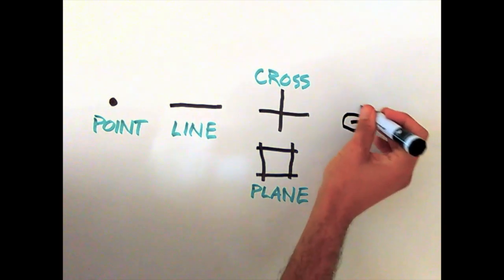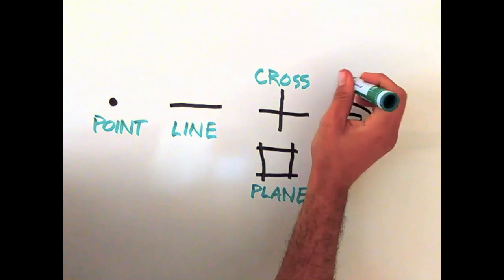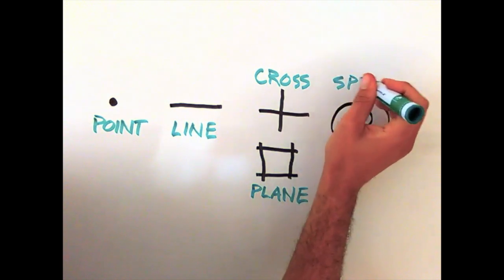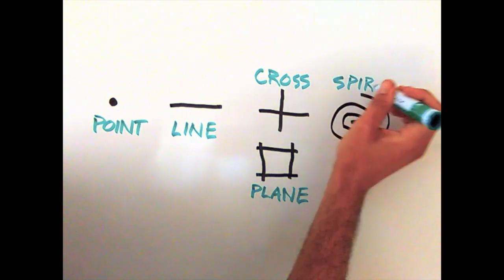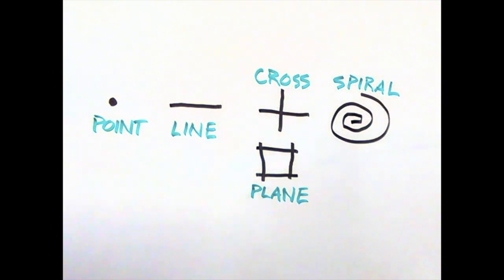Spiral. Multiplication of crossing lines and planes in three-dimensional space creates spiral formations.